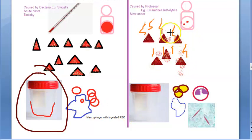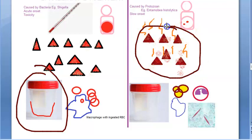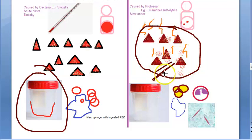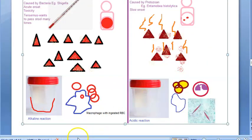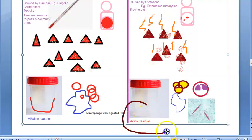In amoebic dysentery, the stool frequency is just 6 to 8 per day. It has an offensive foul odor. The color is actually dark red or brown, because there is more feces mixed with a little blood and mucus. The stools do not stick to the container. The reaction is acidic.